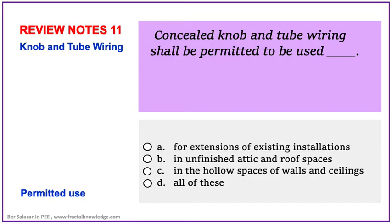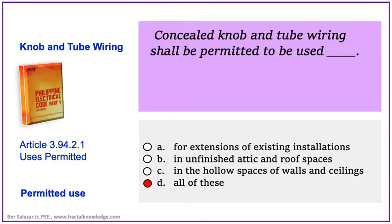Another possible problem for knob and tube wiring asks about the permitted uses. Is it for extension of the existing installation, for unfinished attic and roof spaces, for hollow spaces of walls and ceilings, or possibly all of the above? The correct answer can be read in 2017 PEC, page 273, section 3.94.2.1 Uses Permitted. With PEC knowledge, you can easily answer letter D: all of the above.